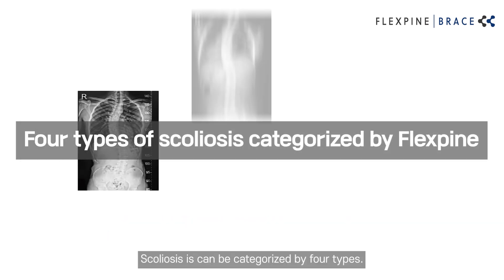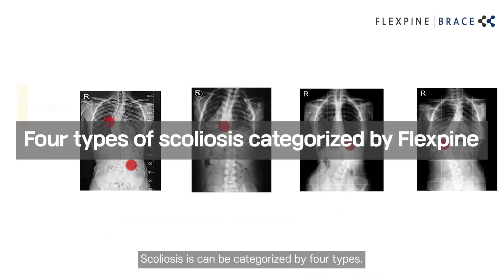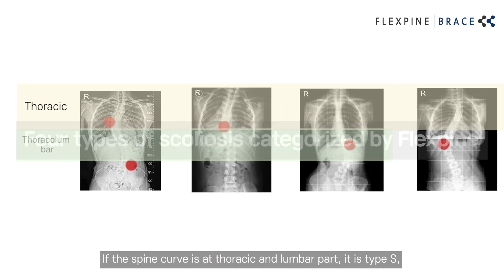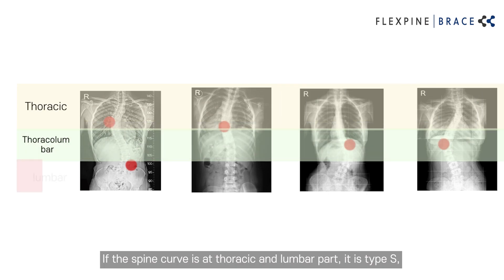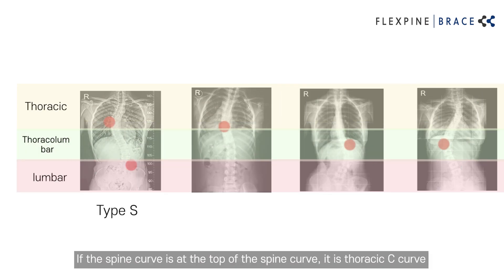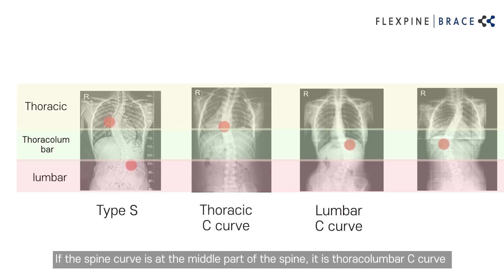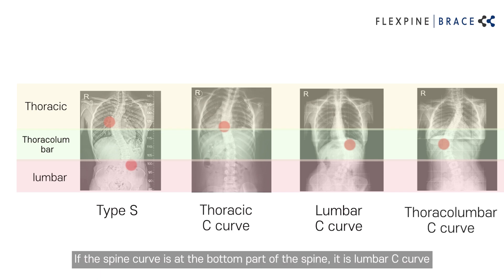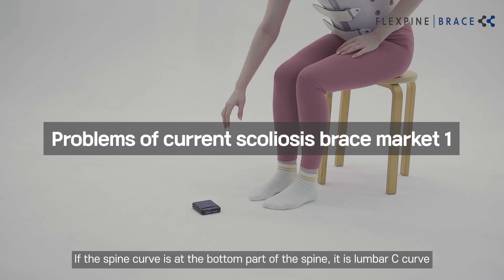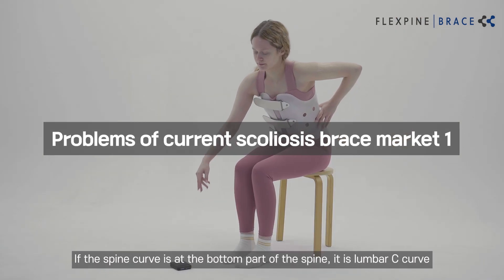Scoliosis can be categorized into four types. If the spine curves at both the thoracic and lumbar parts, it is type S. If the curve is at the top of the spine, it is a thoracic C curve. If the curve is at the middle part of the spine, it is a thoracolumbar C curve. And if the curve is at the bottom part of the spine, it is a lumbar C curve.